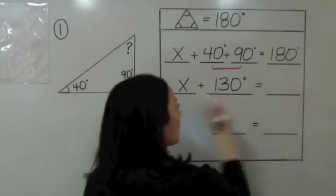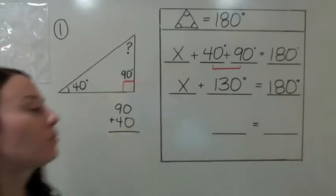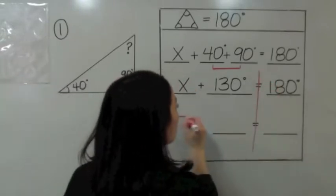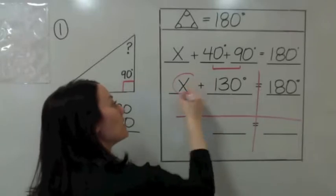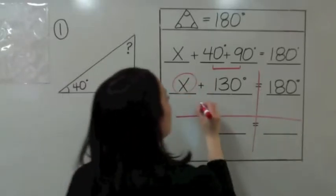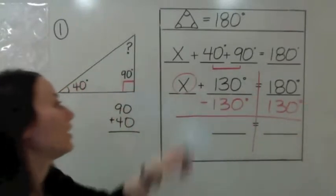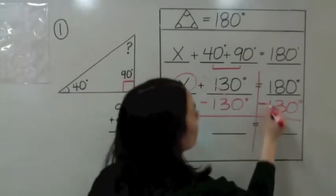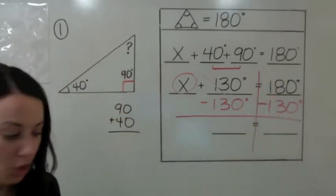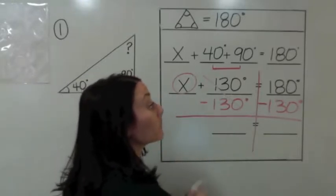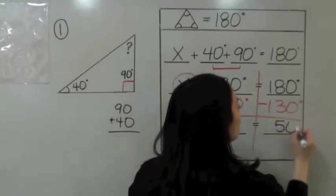Rewrite X and rewrite 180. Now we have an equation we can solve. Make a T through the equal sign, make some space, and circle X. What is the opposite of positive 130? It's negative 130. So you're going to subtract 130 from both sides. Positive 130 and negative 130 make zero. 180 minus 130 is 50, so X equals 50 degrees.